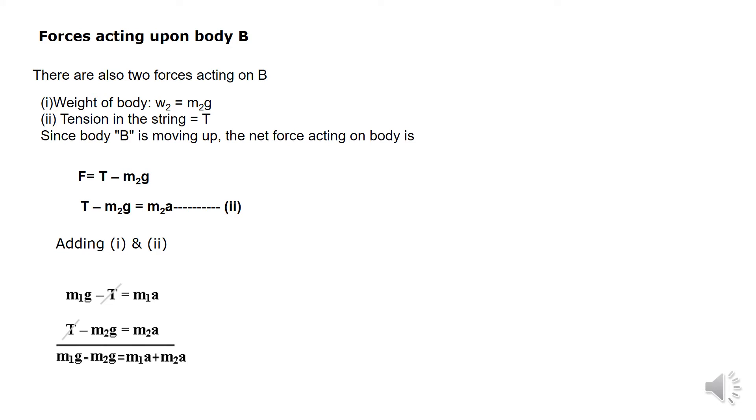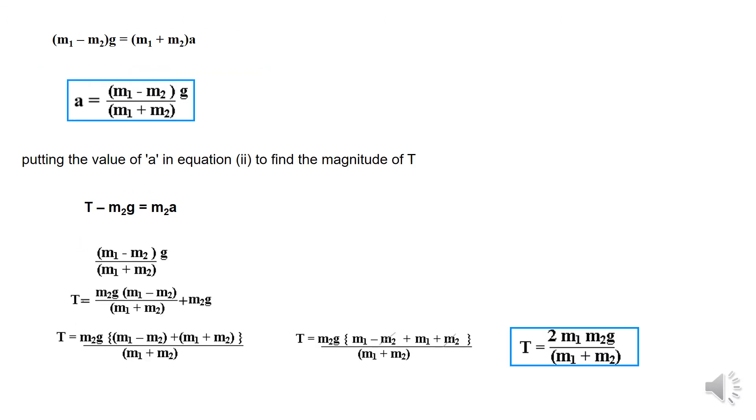When you add the two equations, you get M1G minus M2G equals M1A plus M2A. Now taking G common on the left hand side and A common on the right hand side, we get M1 minus M2 times G equals M1 plus M2 times A.